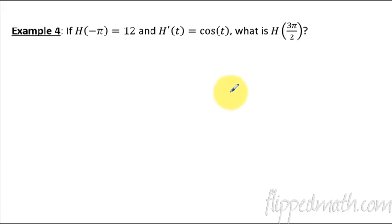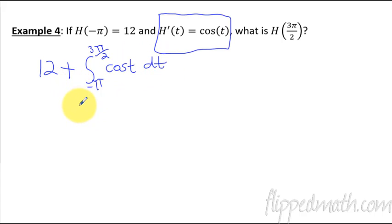Alright, last example. This situation, it's kind of similar to what we've already done. When you have a derivative function and they want to know what is H of something, the original function, all you need to know is one other point of the function. So if we have H of negative pi and we know it equals twelve, then what we can do is we say twelve plus, it's just like the example from number two. We're going to start off at twelve and we're going to add how much it changes between negative pi and three pi over two. Three pi over two. And then we take the derivative, or excuse me, the integral of the derivative cosine of t with respect to t.